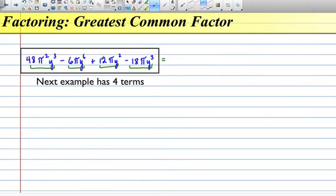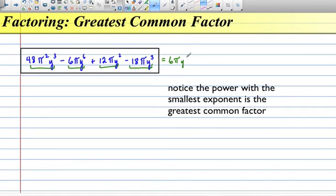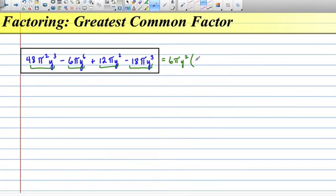The highest common factor, or the greatest common factor, would be 6πy squared. Dividing that out, we have 48 divided by 6, which is 8, π squared divided by π is π, and y cubed divided by y squared is y,